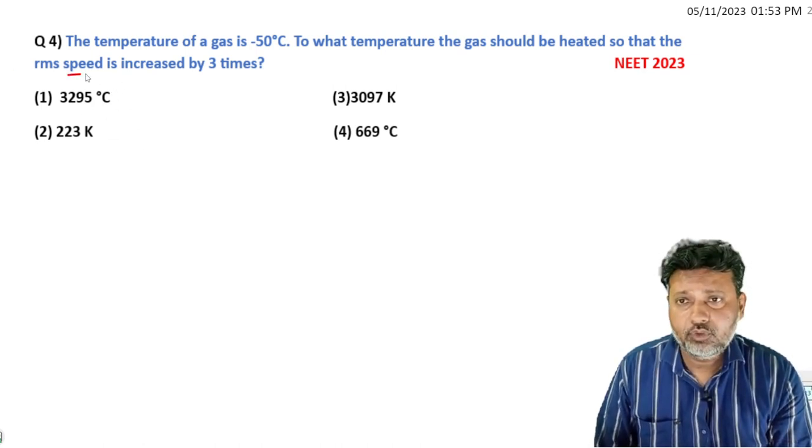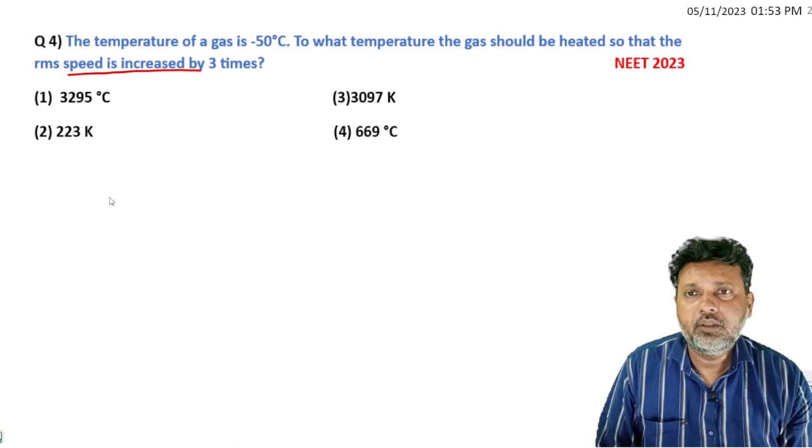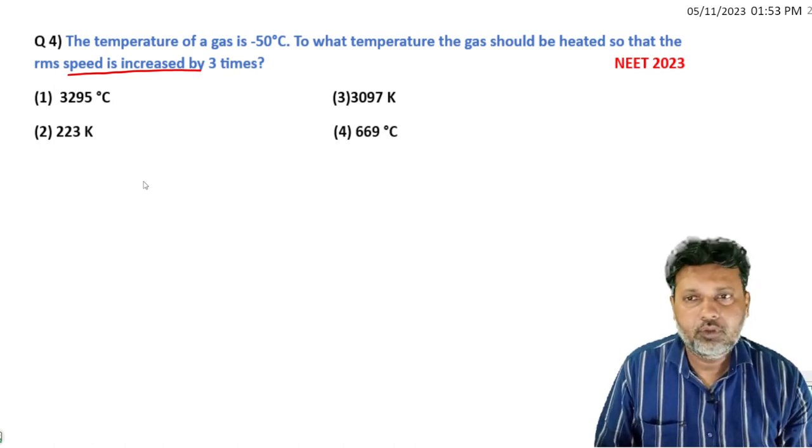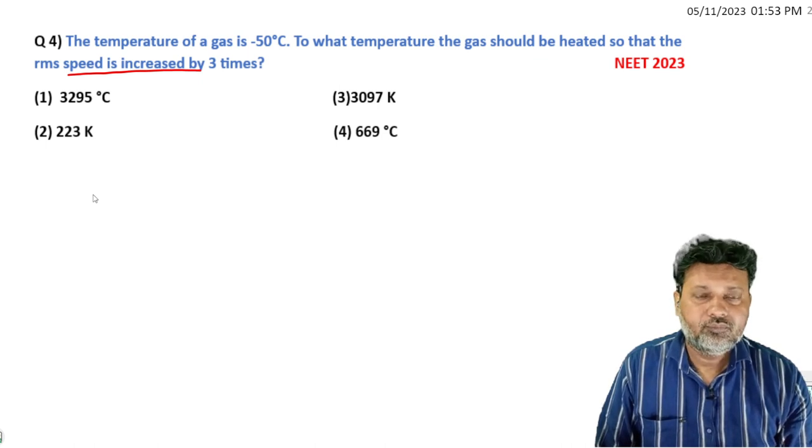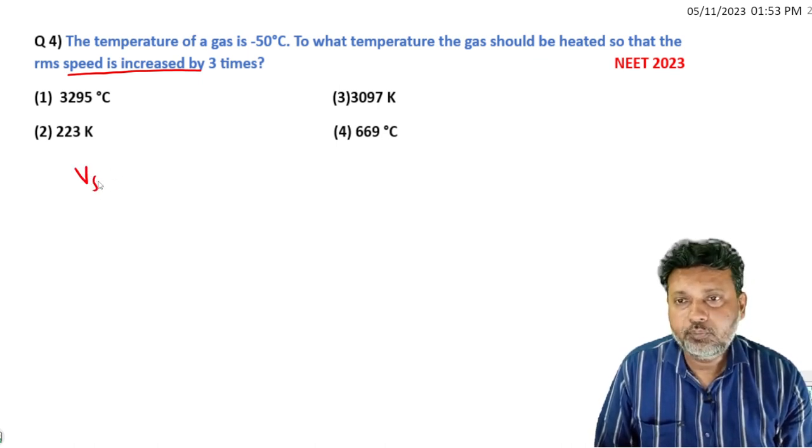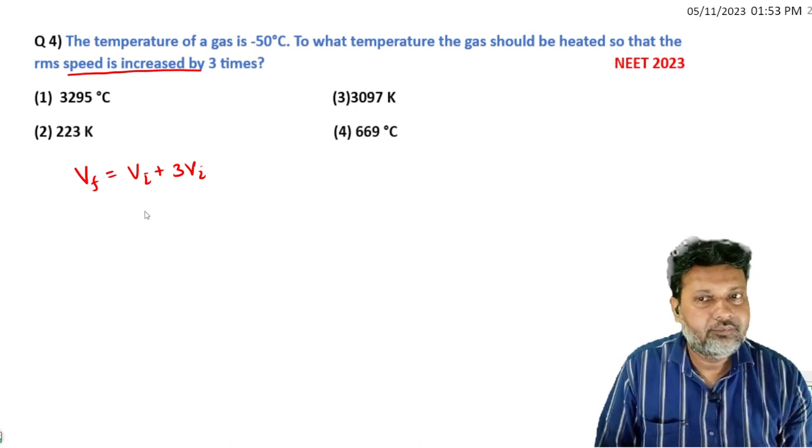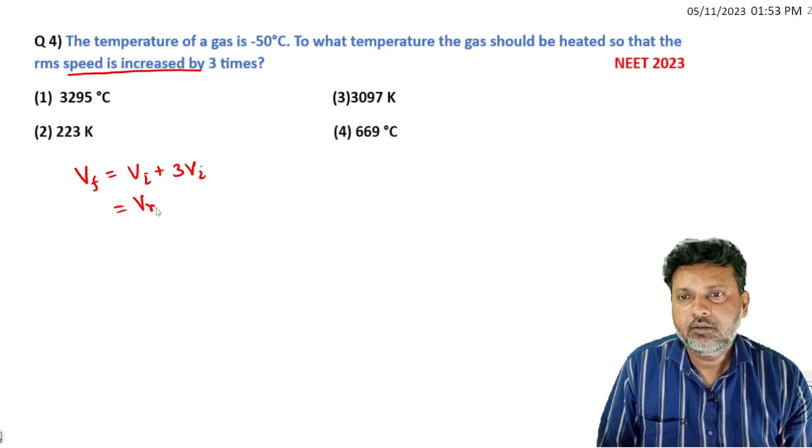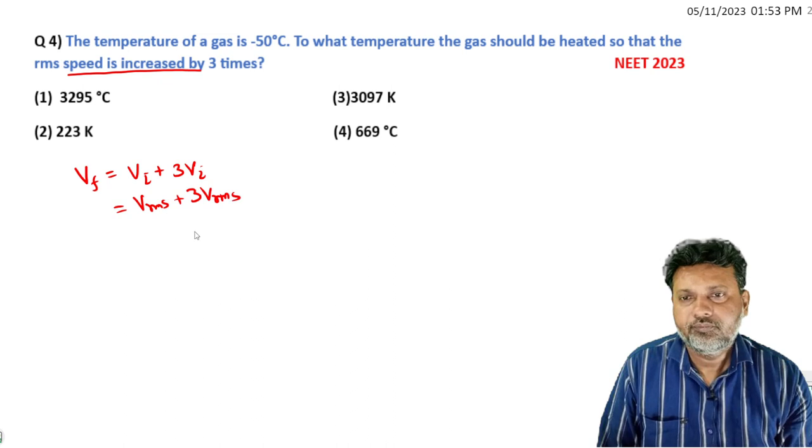Important point: when RMS speed is increased by three times, does it mean three times the original or does it become three times? If the final speed is three times increased, then the final V_RMS would be initial speed plus 3 times initial, so four times the initial speed.